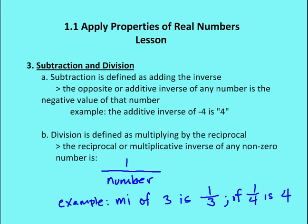Division is defined as multiplying by the reciprocal. So the reciprocal or multiplicative inverse of any non-zero number is 1 over that number. So an example of MI, which is multiplicative inverse of 3, is 1/3. And the multiplicative inverse of 1/4 is 4.